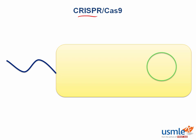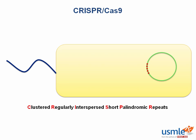CRISPR is basically a part of the bacterial immune system to defend it against viruses. Here's our bacterium with a flagellum and a circular DNA. Like many other things in biology, CRISPR was named before anybody really knew what it did, so the name might not seem to fit the function. It stands for clustered, regularly interspersed, short palindromic repeats. Basically, CRISPR is a repeated sequence of DNA, which I'm showing with these red dots here.